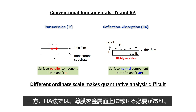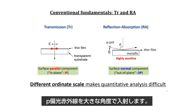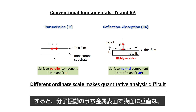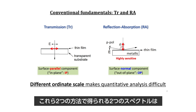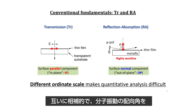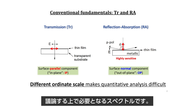In the case of the RA technique, the film must be deposited on a metallic surface, and the P-polarized IR light is irradiated at a grazing angle to generate the surface normal electric field oscillation at the metallic surface. As a result, only the surface-perpendicular component of molecular vibrations is selectively observed. In this manner, the two spectra obtained by the two techniques are complementary with each other, which are necessary to discuss the orientation angle of the molecular vibrations.